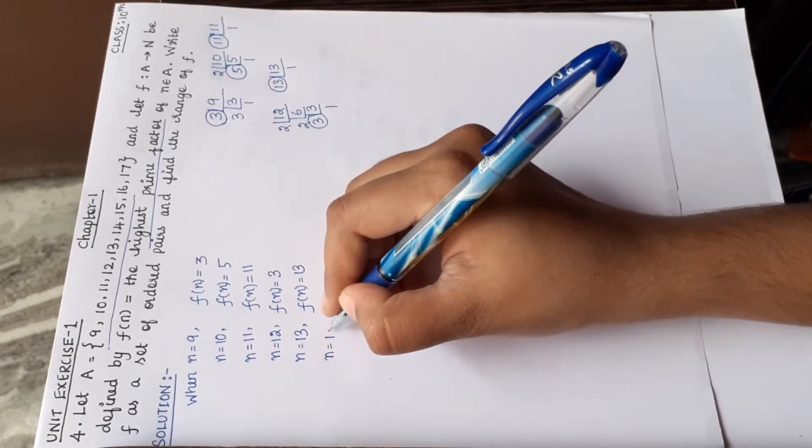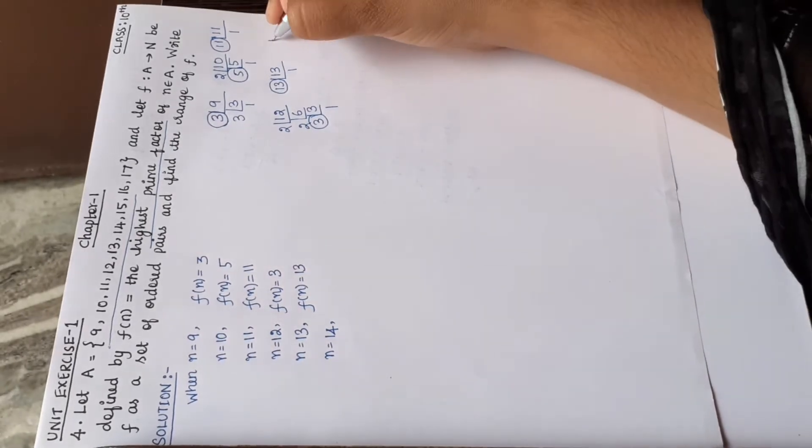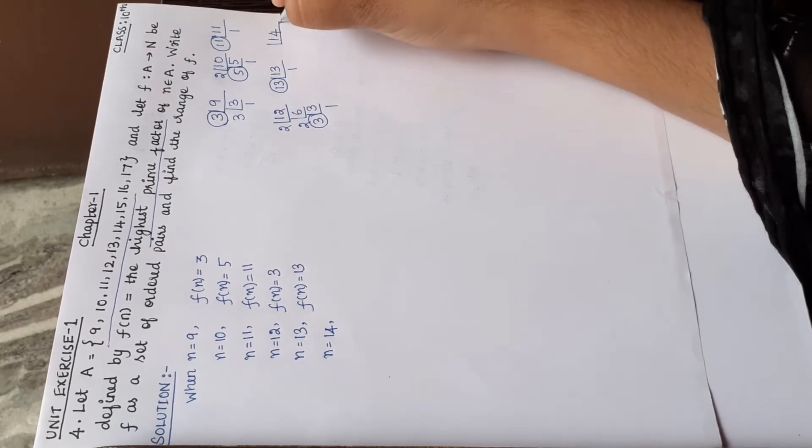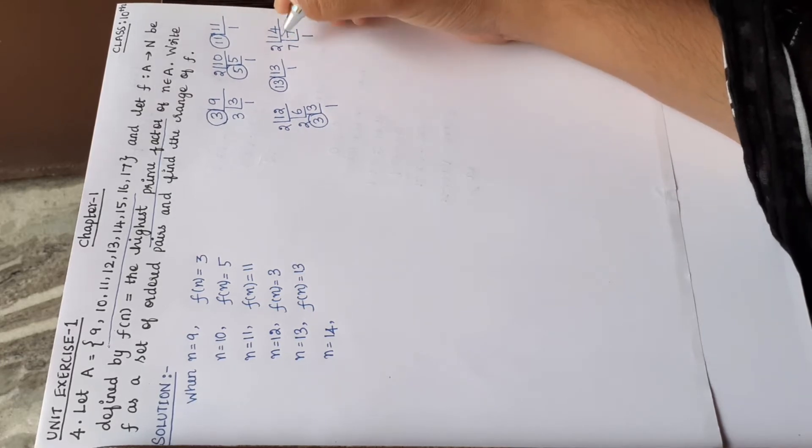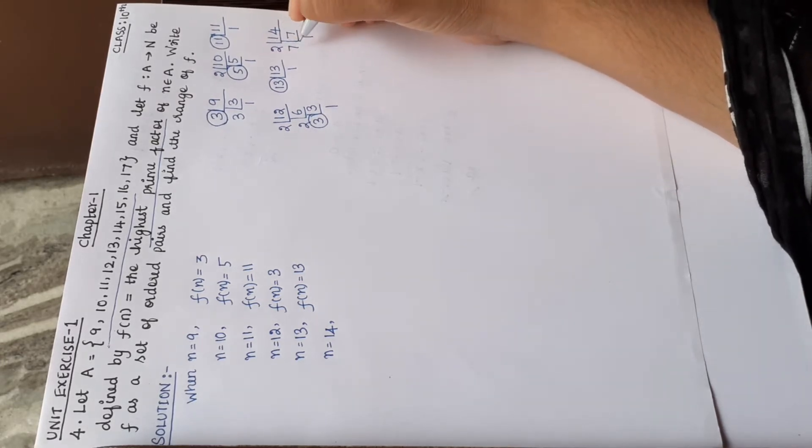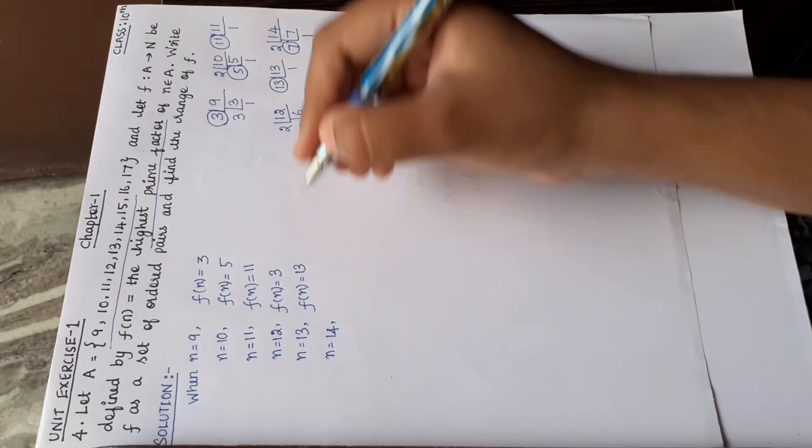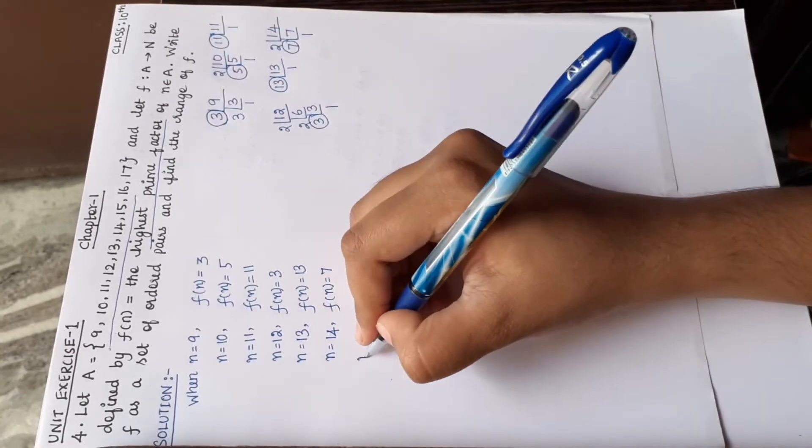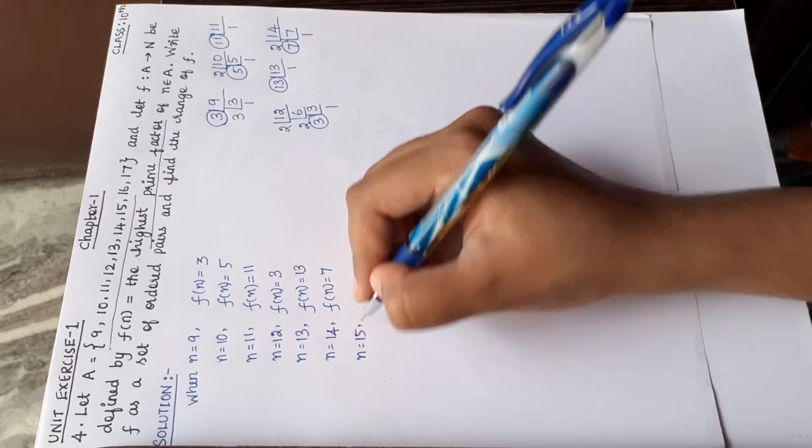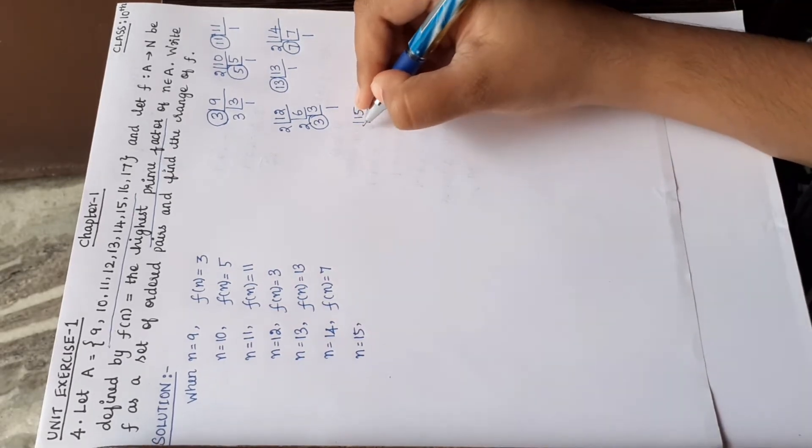Next is n is equal to 14. 14 factorize: 2 times 7, then 7 times 1. So 2 and 7 are the factors. So this is the highest value, f of n is equal to 7.